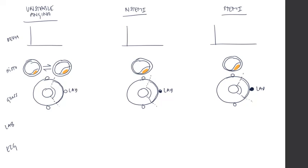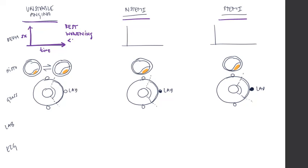Let's now classify and define unstable angina, NSTEMI, and STEMI. Unstable angina is defined as angina that occurs at rest or angina that is worsening over time, and that lasts for a duration of less than 10 to 20 minutes.